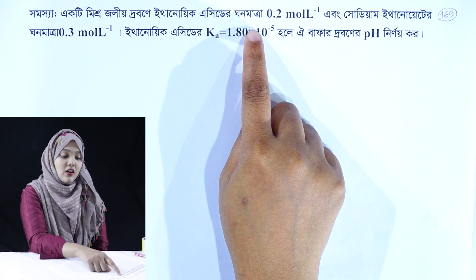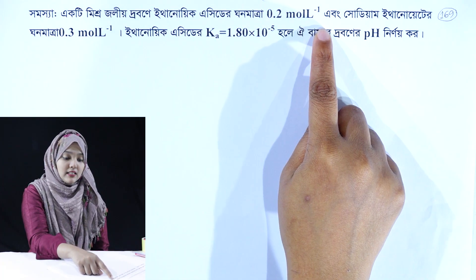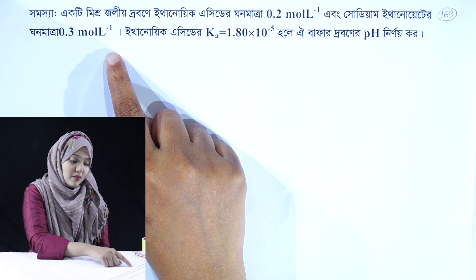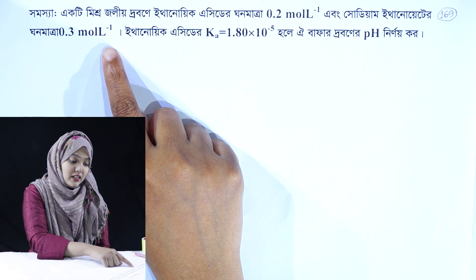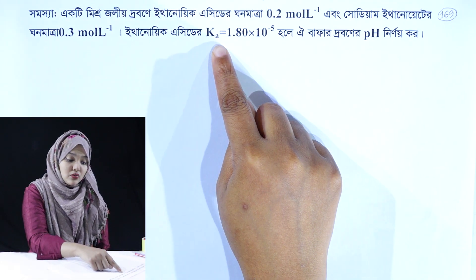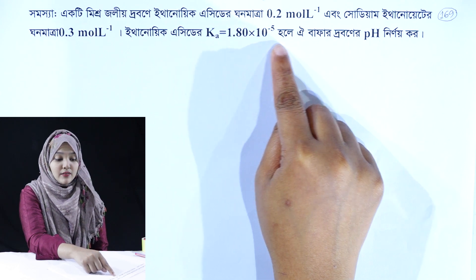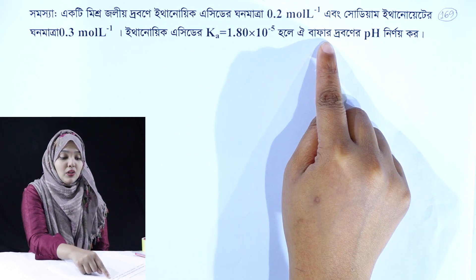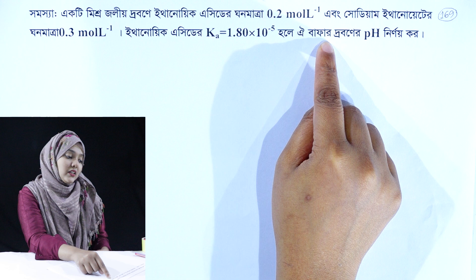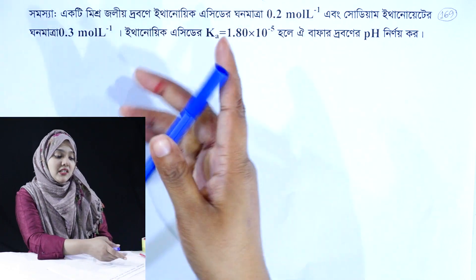The acid concentration is 0.2 mol per liter and the salt (sodium) concentration is 0.3 mol per liter. The Ka value is 1.80 × 10⁻⁵. We are going to calculate the buffer solution pH.